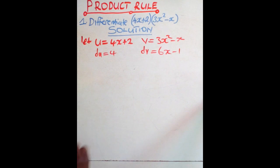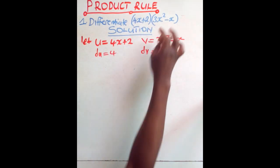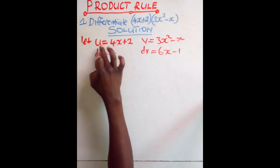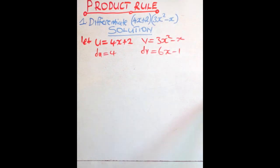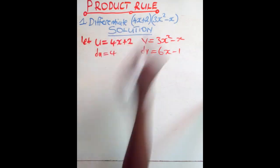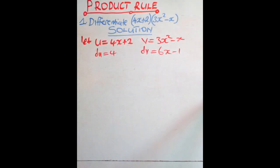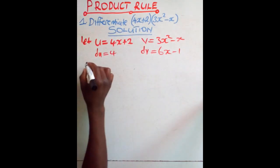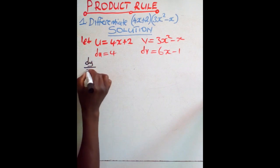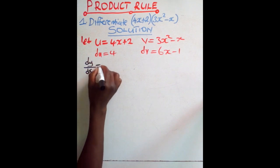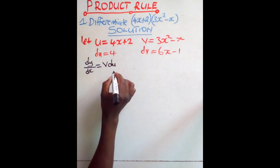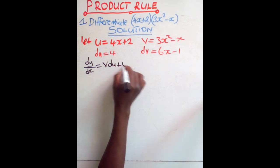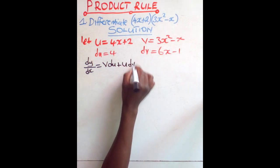So at this point, we just assign this is equal to u, this is equal to v. Find or differentiate u with respect to x, differentiate v with respect to x. Then from there, the rule itself, the product rule, what does it state? It states that dy over dx is equal to v du plus u dv.